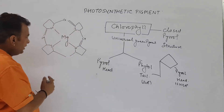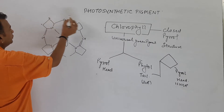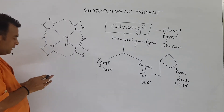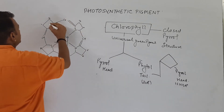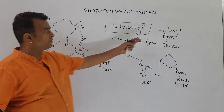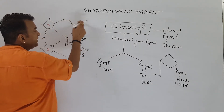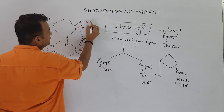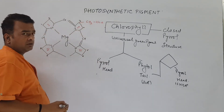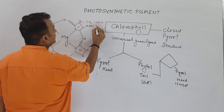This is a closed tetrapyrrole ring. The numbering goes up to eight carbon atoms on the pyrrole rings. If at the third carbon atom of the second pyrrole ring a CH3 group is present, then it is known as chlorophyll A. But if at the same position — the third carbon atom of the second pyrrole ring — a CHO group is present, then it is chlorophyll B.